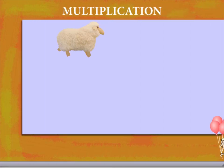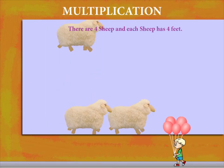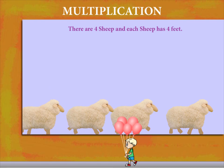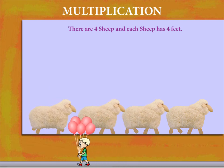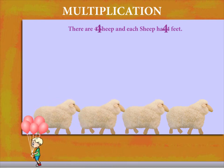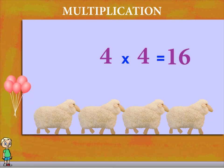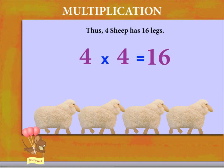Multiplication. Here come 4 sheep, each moving on their 4 legs. So 4 sheep and each has 4 legs. 4 into 4 is 16. So 4 sheep have 16 legs.